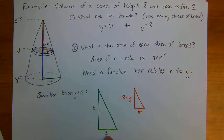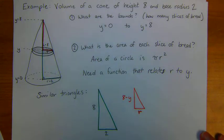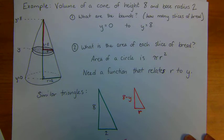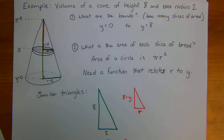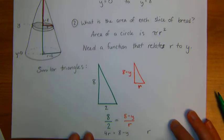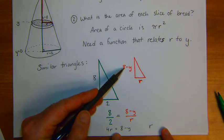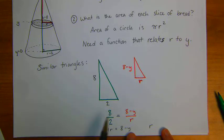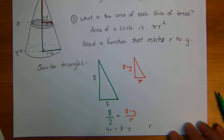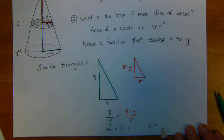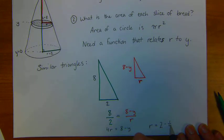These similar triangles give me a ratio of the fact that 8 is to 2 in the green triangle as 8 minus y is to r in the little red triangle. I can simplify this. 8 divided by 2 is 4. And I see that this gives me 4r equals 8 minus y, or r equals 2 minus 1/4 y.